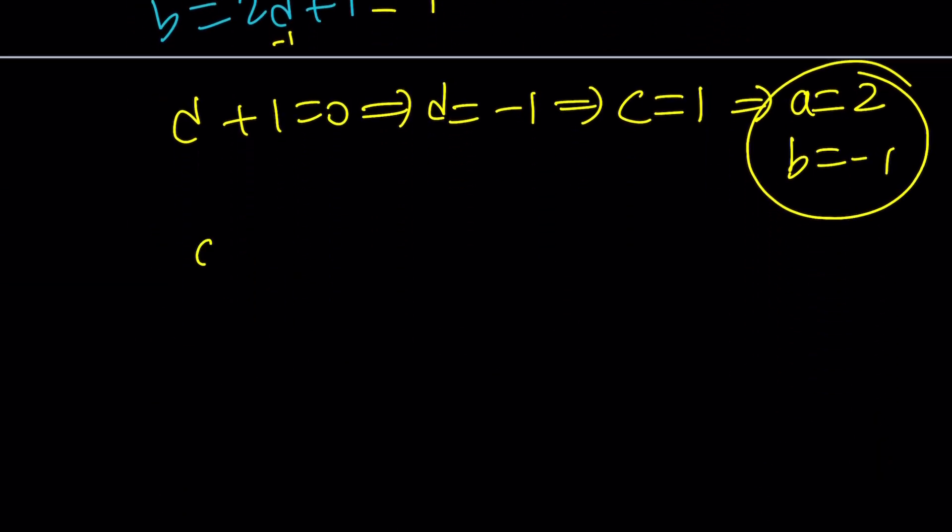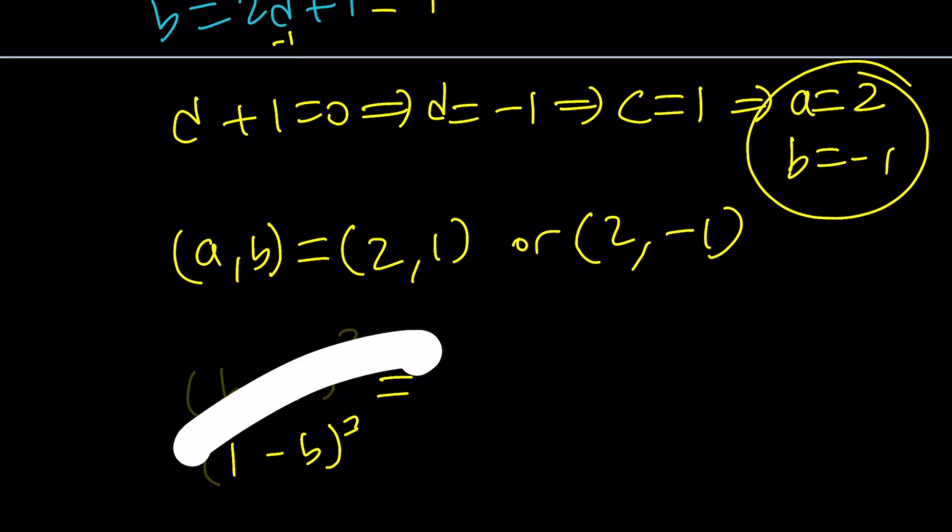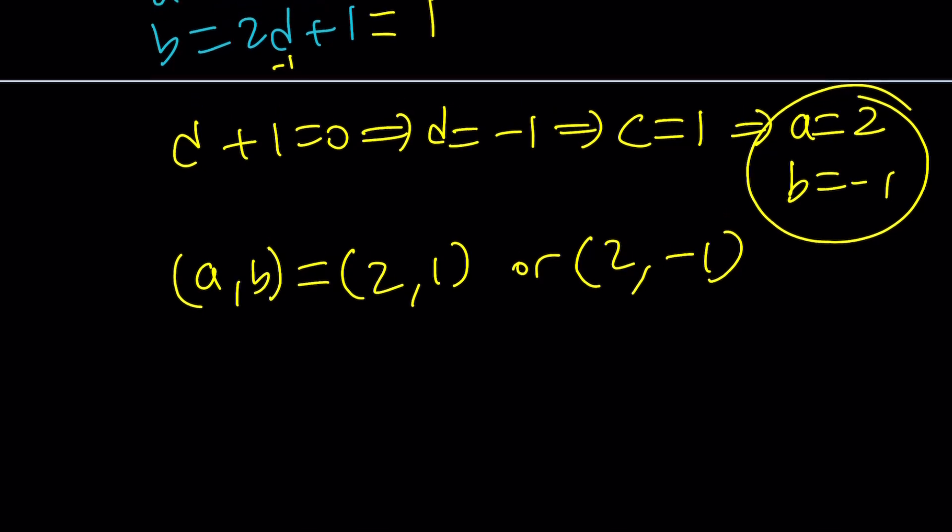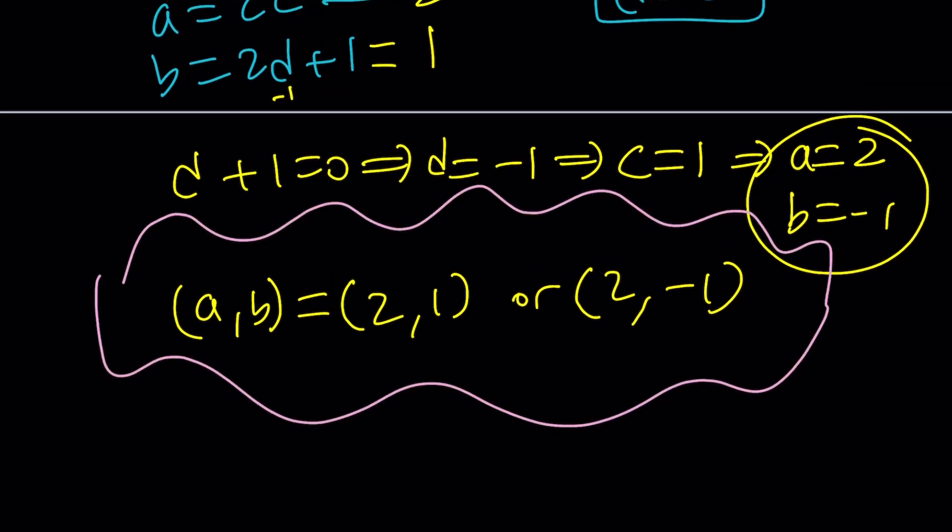So those are going to be pretty much the solutions. (A, B) can be (2, 1) or (2, -1). And you can definitely go ahead and plug these into the equations. For example, if you expand (B + 1)³ and (1 - B)³ and add them up, you're going to get 6B² + 2, which is equal to A³. This brings us to the end of this video. Thank you for watching. I hope you enjoyed it. Please let me know. Don't forget to comment, like, and subscribe. I'll see you next time with another video. Until then, be safe, take care, and bye-bye.